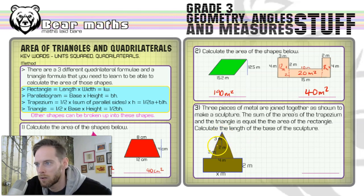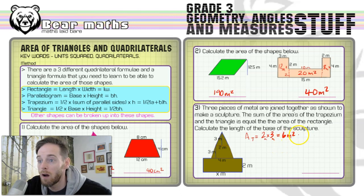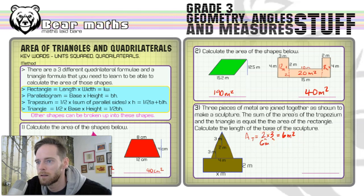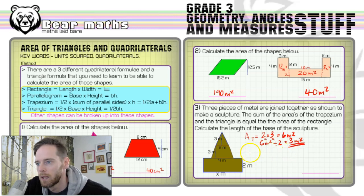First, calculate the area of the triangle: 2 times 3 equals 6 meters squared, and since it's a triangle we halve it, giving 3 meters squared. Underline that.